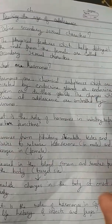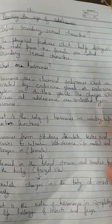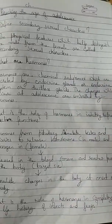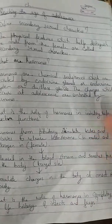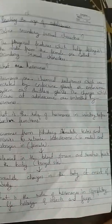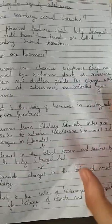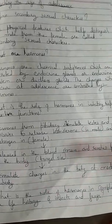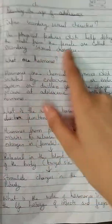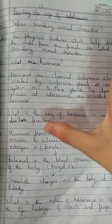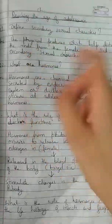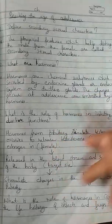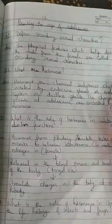Menstruation is another important topic from this chapter — you need to know the definition, and the process can also be asked. So that covers the chapter. The main focus should be on the differences between males and females and all the points that come under secondary sexual characters.